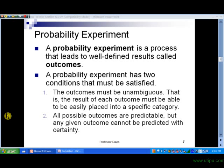We can define a probability experiment as a process that leads to well-defined results called outcomes. And we see here in slide number 7 the two conditions that must be satisfied for an experiment to be a probability experiment. The first is the outcomes must be unambiguous, meaning that the outcome of an experiment has to be empirical. In other words, we have to be able to see the results, and it can't be wishy-washy as far as what the outcomes are. We have to be able to write it down with certainty what the outcome is for a specific experiment.